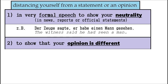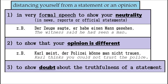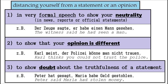Number two — to show that your opinion is different. For example: 'Carl meint, der Polizei könne man nicht trauen' — 'Carl thinks you could not trust the police.' Number three — to show doubt about the truthfulness of a statement. For example: 'Peter hat gesagt, Maria habe Geld gestohlen' — 'Peter said Maria had stolen money.' Now if you are very sure that the statement is a lie, you would probably use the Konjunktiv 2 instead.